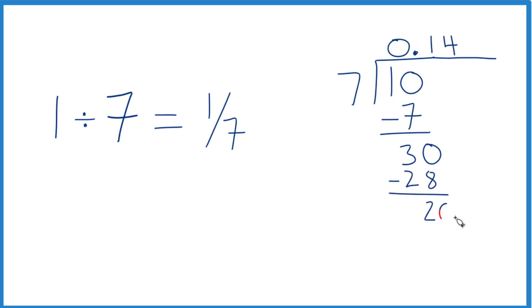Move over 1, so we can call this 20. 7 times 3 is 21. That's too much, so 2. So 2 times 7, that's 14. And we subtract and get 6. Move over 1, call it 60.